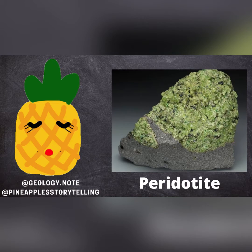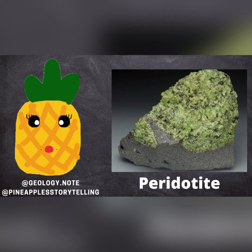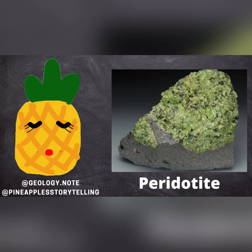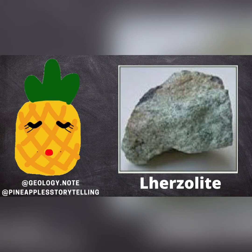I'm sure you can get a lot of definitions on the internet, but I would like to tell you the composition of peridotite, and then you will know the relationship between peridotite and magma. It is composed of olivine, clinopyroxene, orthopyroxene, and garnet mainly.